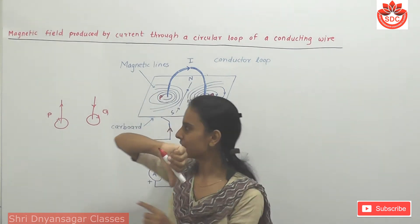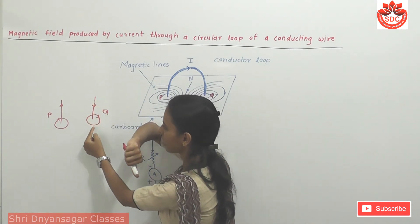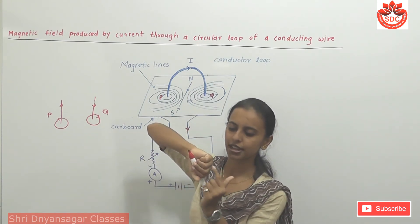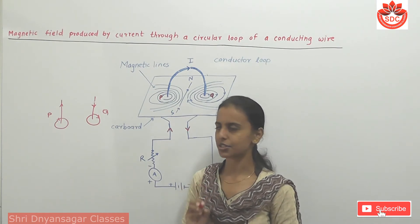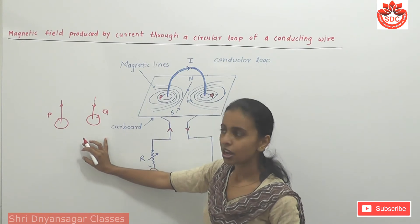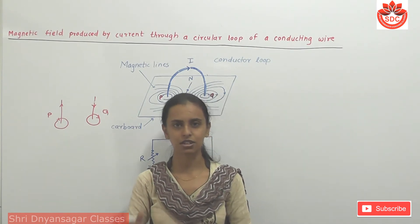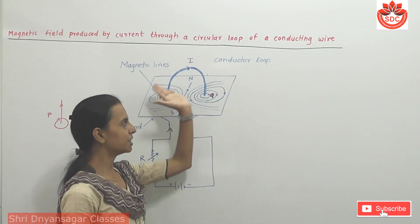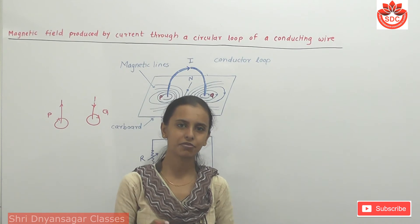The direction of the electric current and the curved fingers indicate the direction of the magnetic lines of force. The direction of magnetic lines are opposite on different sides, and the same conductors behave in the same way. If you look at the coil structure, the magnetic field is produced accordingly.